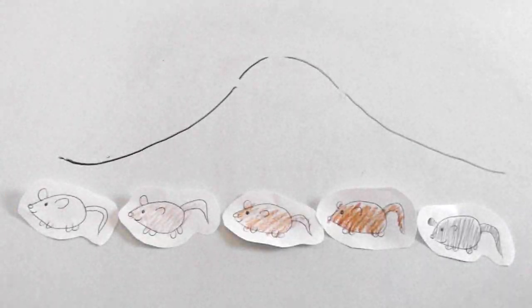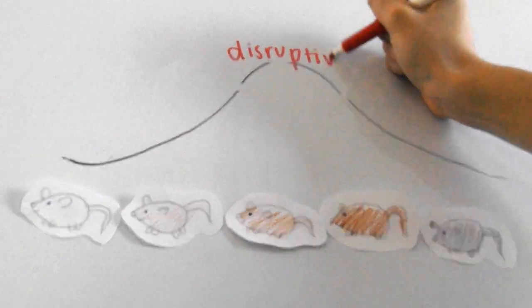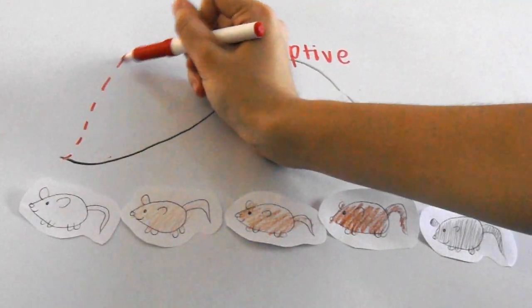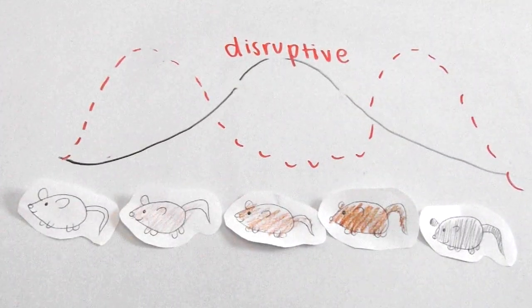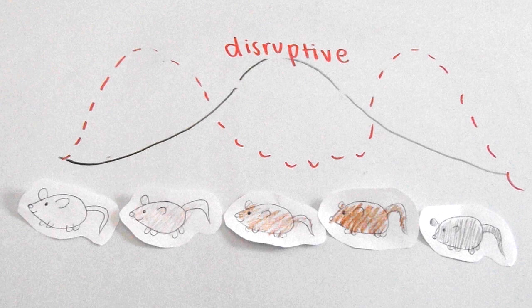The next one is called disruptive selection. The curve is disrupted and only individuals with extreme phenotypes are favored. Maybe the soil has patches of very dark and very light dirt and the intermediate colored mice have no place to hide.